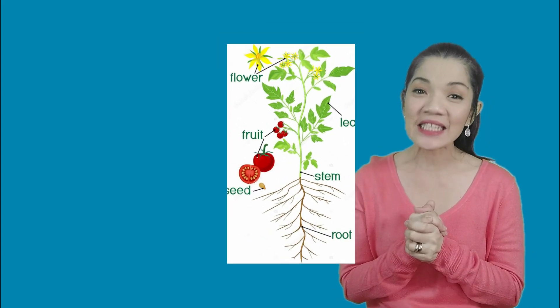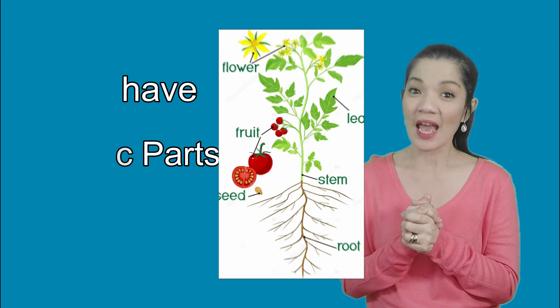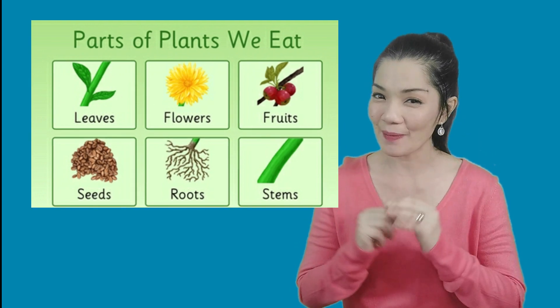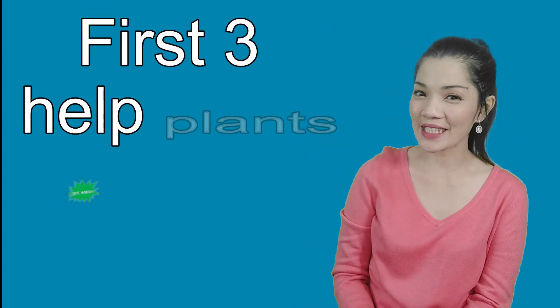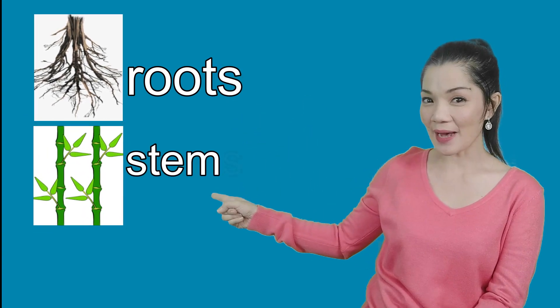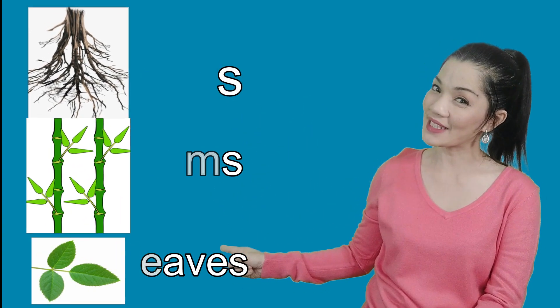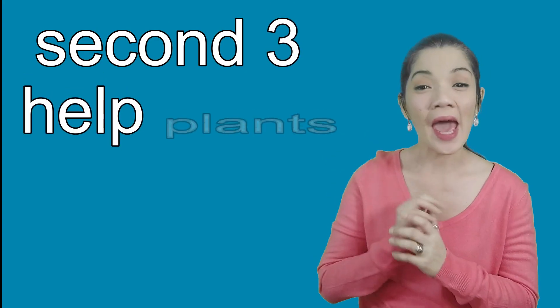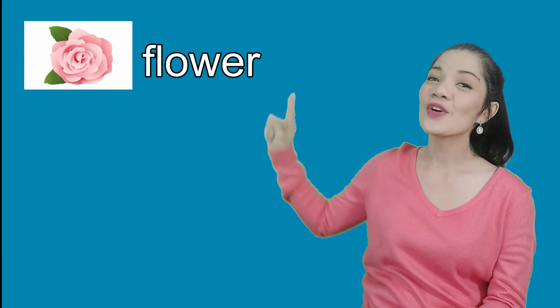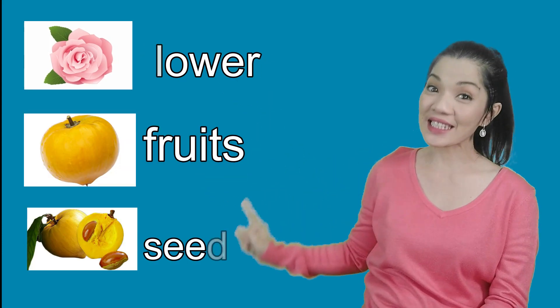So plants have six basic parts. There are six plant parts. The first three help plants get water, food, and grow. They are roots, stem, and leaves. The second three help plants grow new plants. They are flower, fruits, and seeds. So let's learn the plant parts one by one.